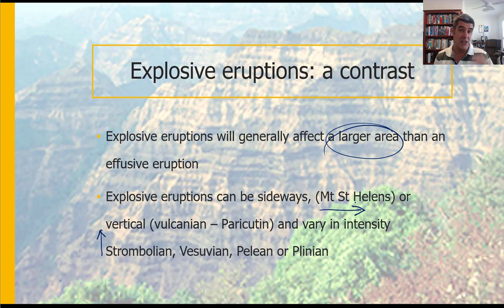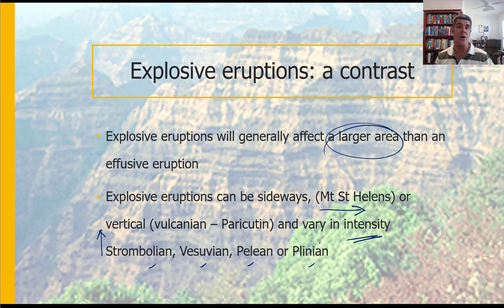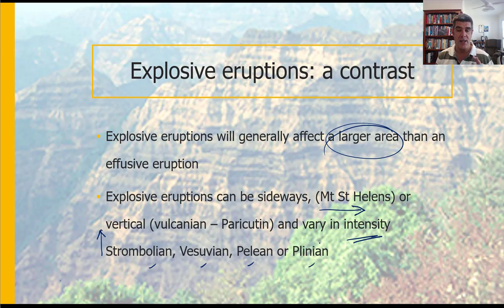As you saw from the VEI, there is a significant variation in intensity when we're talking about different types of volcanic eruptions. Some of these are linked to the names of different types of volcanoes that have exploded in the past, and so we've described these types of intense volcanic eruptions as being like the Vesuvian, or like the Pelean, or Strombolian. These are the different ways in which we can identify the intensity of different types of volcanic eruptions.